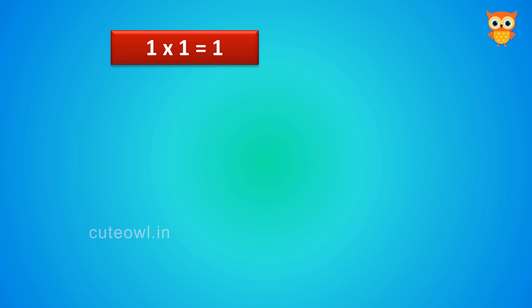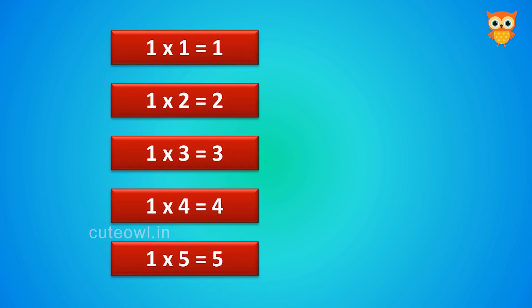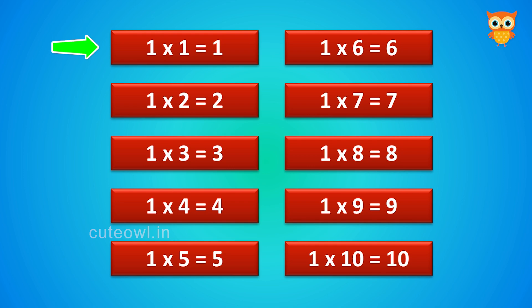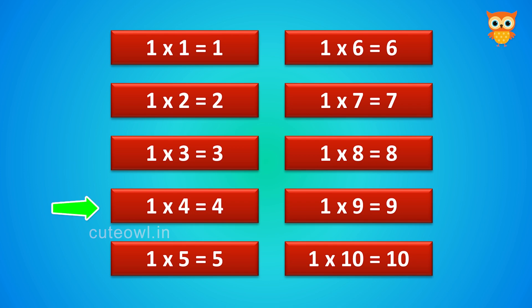Let us learn this table one more time. One ones are one. One twos are two. One threes are three. One fours are four. One fives are five. One sixes are six.